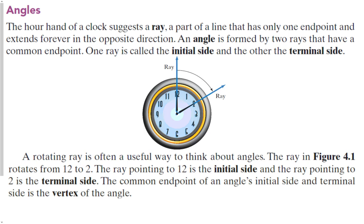Let's start with some basics from geometry. Let's think about angles by thinking about a clock. The hour hand on a clock suggests a ray. A ray is a part of a line that has only one endpoint. We have one endpoint, and it goes forever in the opposite direction away from the endpoint. An angle is what you get when you have two rays that have a common endpoint. Both hands of the clock represent rays shooting out away from the midpoint, and the space in between them represents an angle.